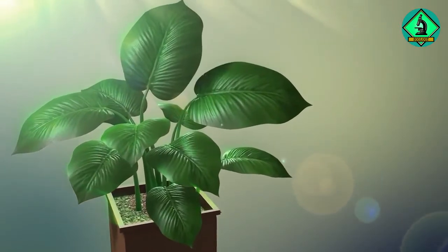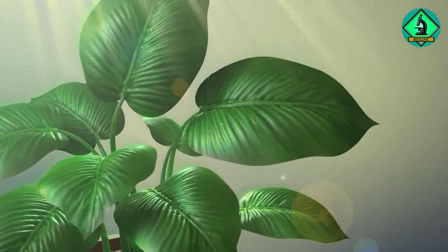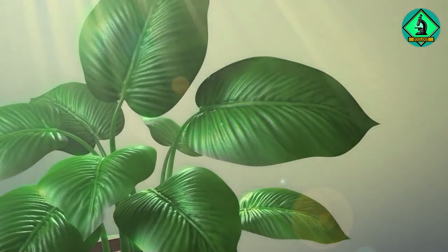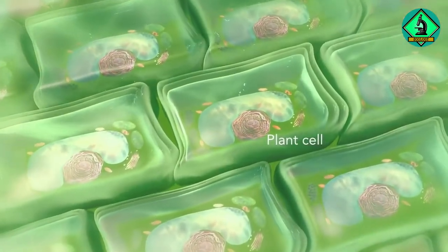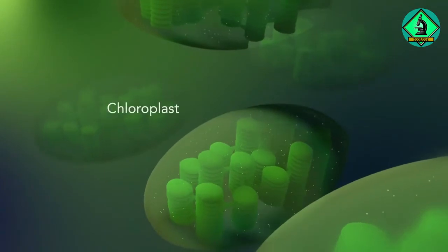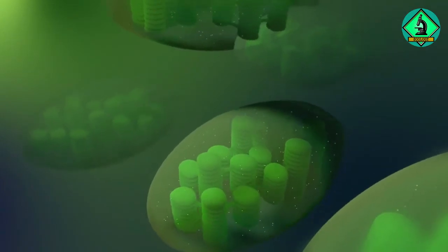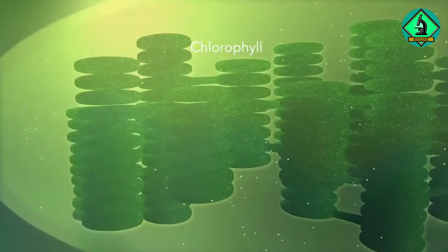Some organisms such as plants that are photoautotrophic, meaning they capture sunlight for energy, have cells with an organelle called a chloroplast. The chloroplast is where photosynthesis happens. It's green because it has a green pigment called chlorophyll.